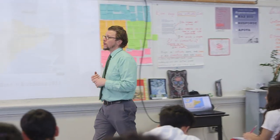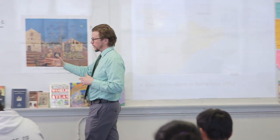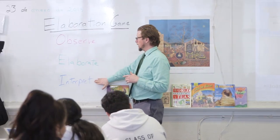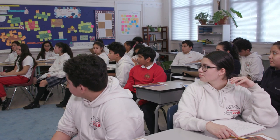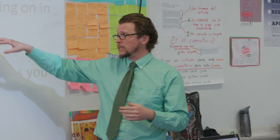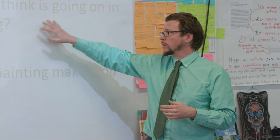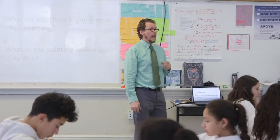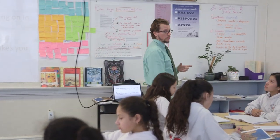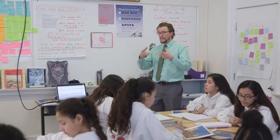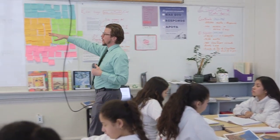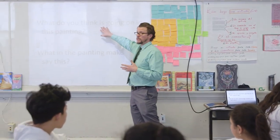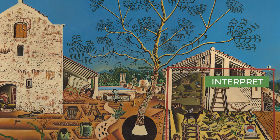Now we want to move toward interpreting what Joan Miró was trying to tell us. We're going to do some turn-and-talk. The idea is to discuss this question first: What do you think is going on in this painting? Specifically, use the observations and elaborations to deepen your thinking. What do you think Joan Miró wants to tell us with his painting?